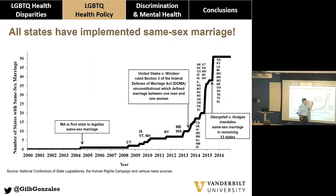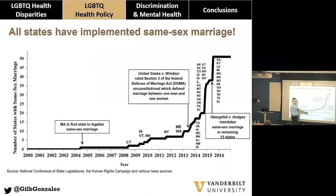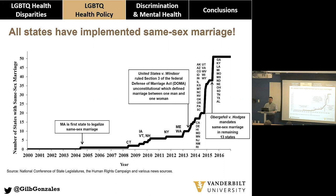In 2015, Obergefell v. Hodges mandated same-sex marriage in the remaining 13 states — places like Kentucky, Louisiana, Mississippi, Tennessee, Texas, and Alabama. From a health services research perspective, we like to see a chart like this because we can leverage variation in timing and geography to do quasi-experimental designs, like a difference-in-differences analysis, for those who have taken health economics or econometrics.